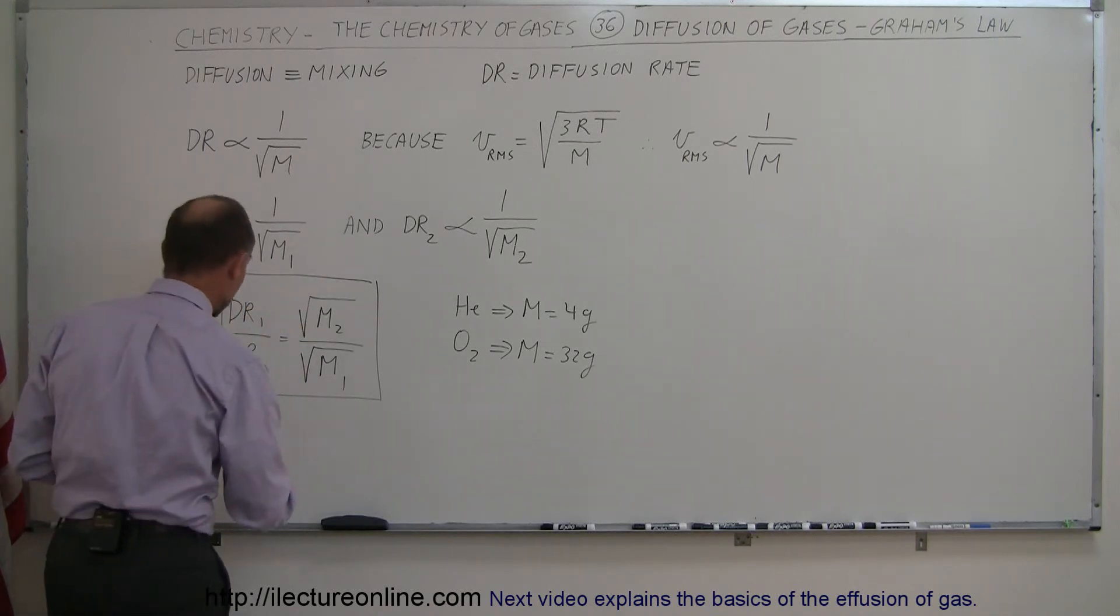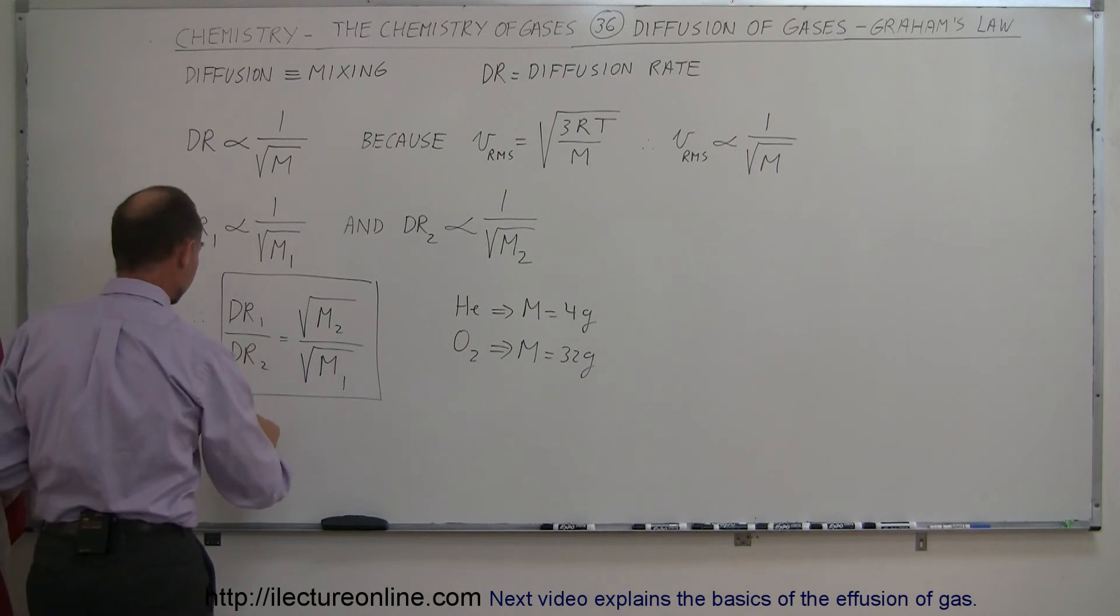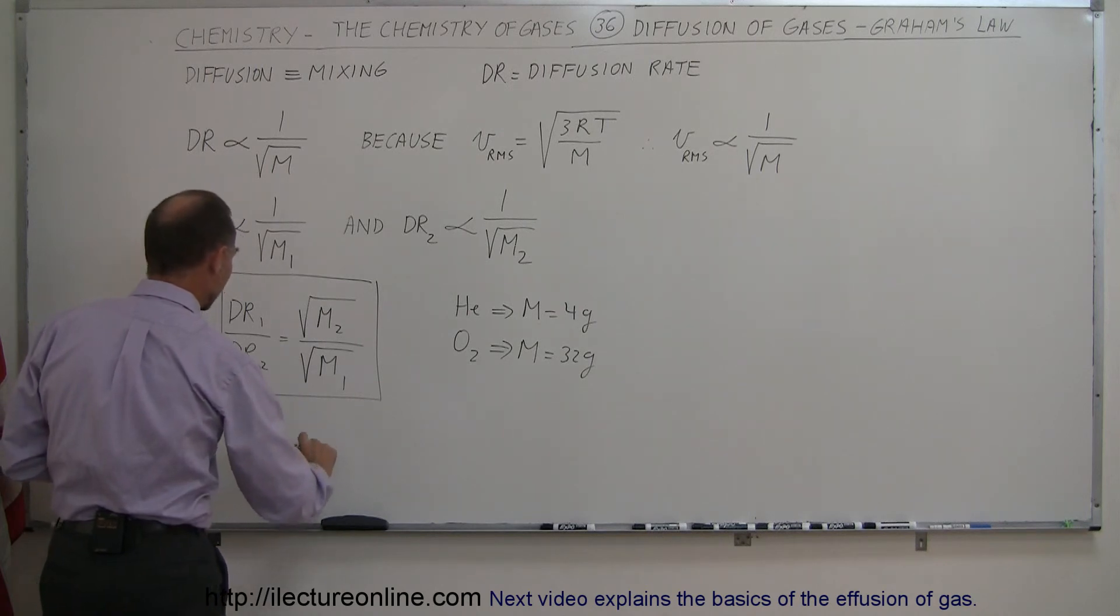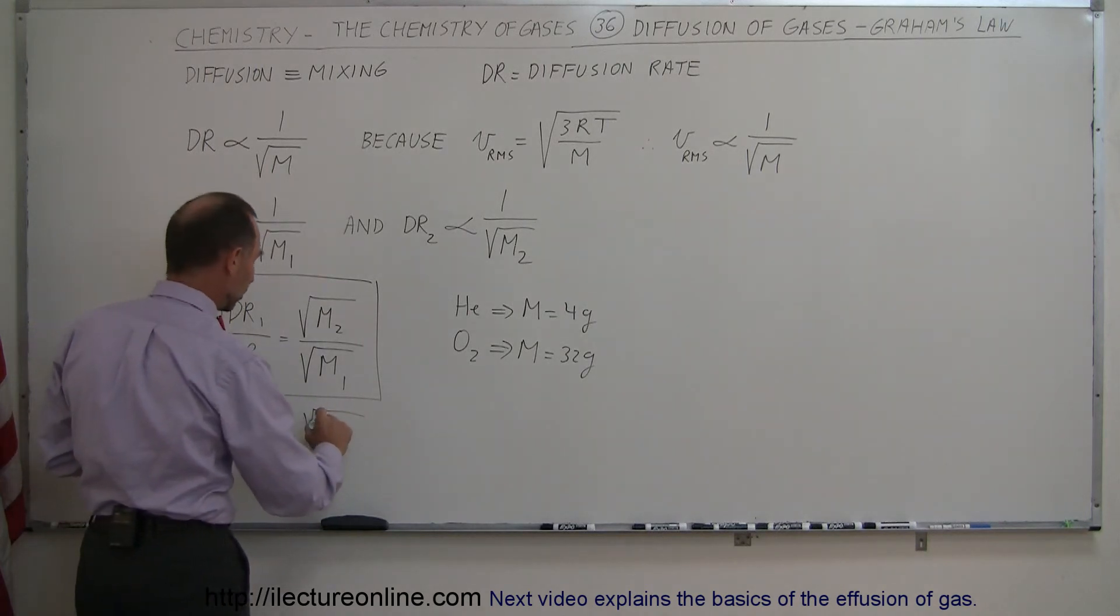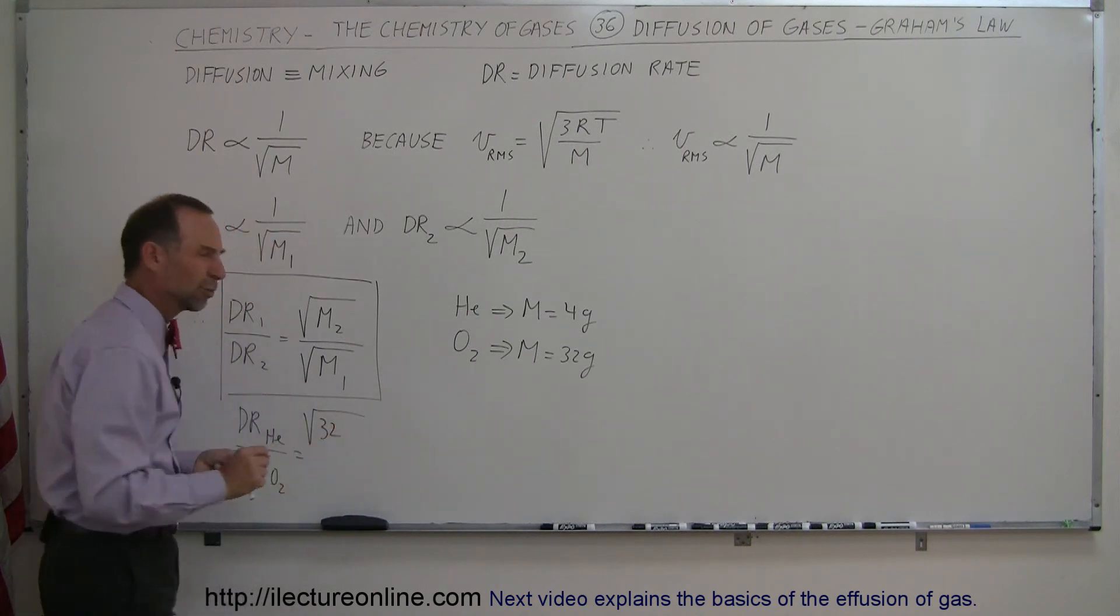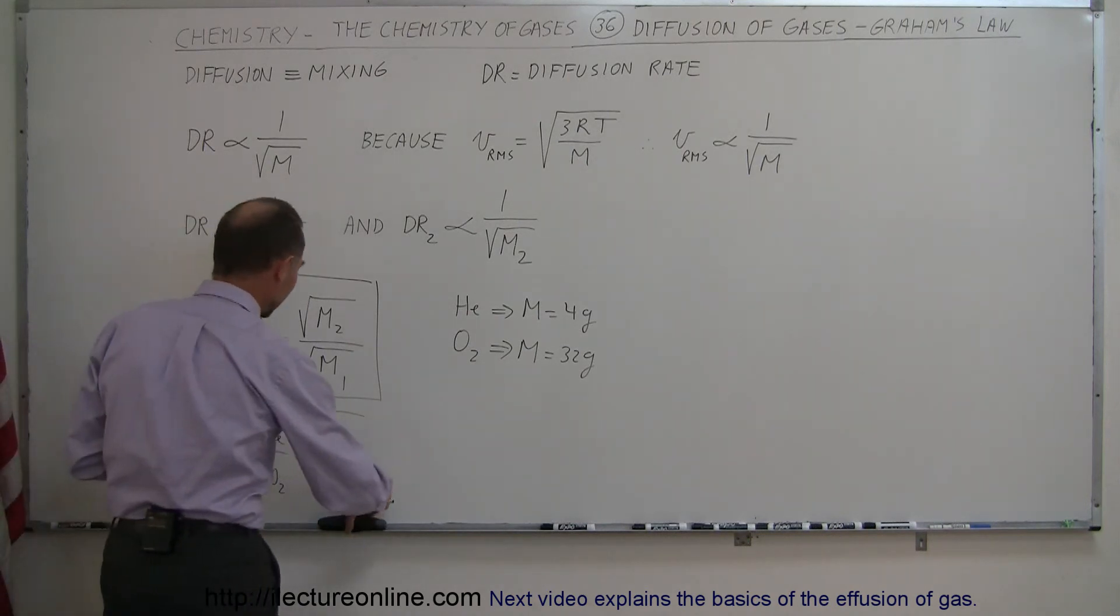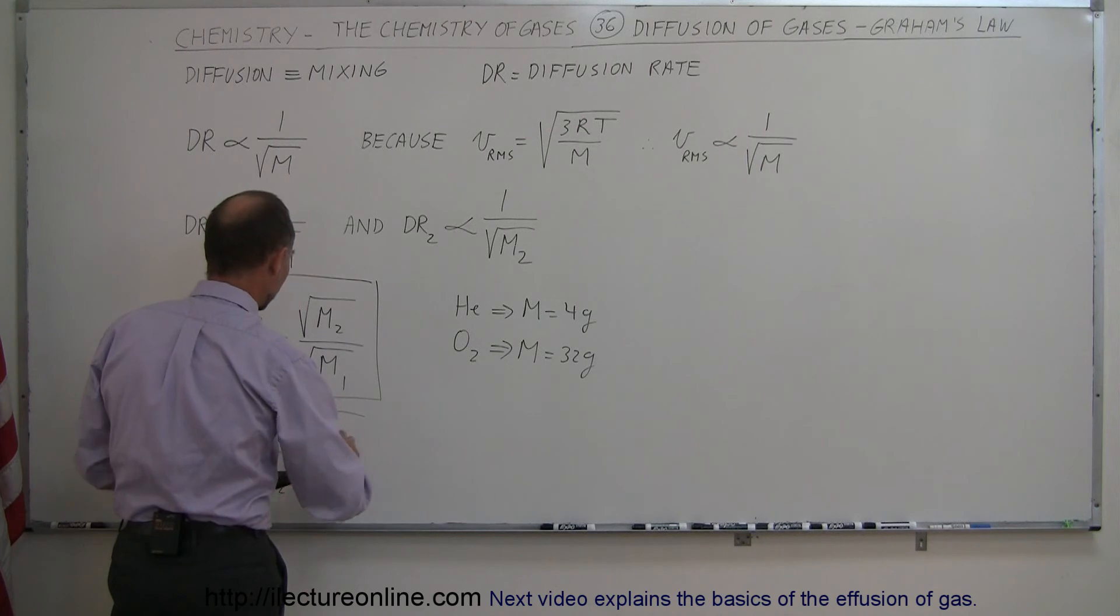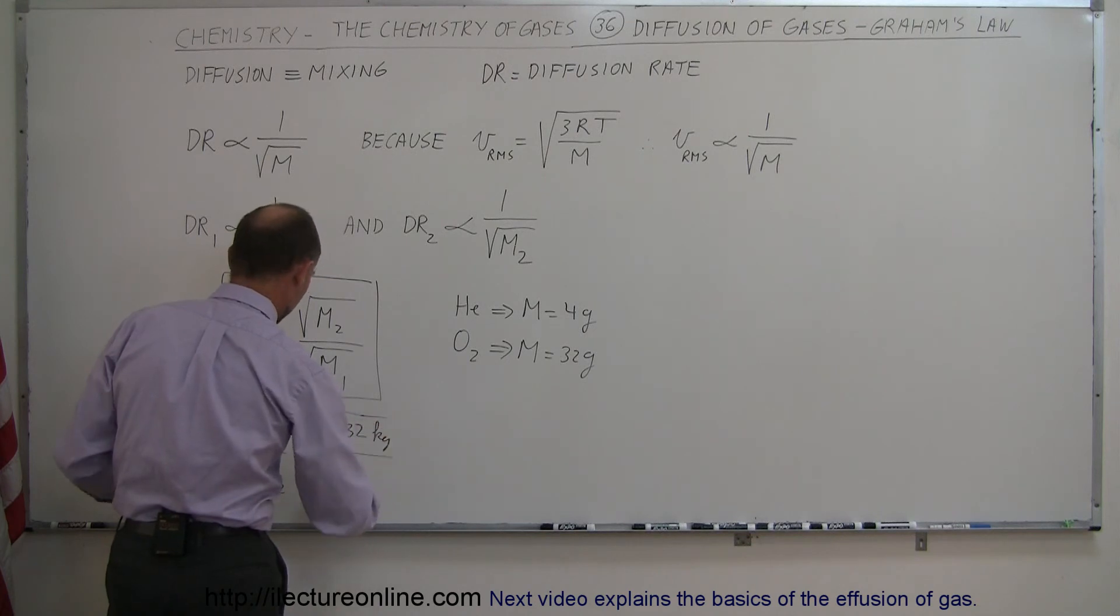So, if we then plug that in here, we can say the diffusion rate of helium divided by the diffusion rate of oxygen gas is equal to the square root of the molar mass of oxygen, which is 32, and of course, we should convert that to kilograms, not that it would make a lot of difference, but let's say it's 0.032 kilograms, divided by the molar mass of helium gas, which is 0.004 kilograms.